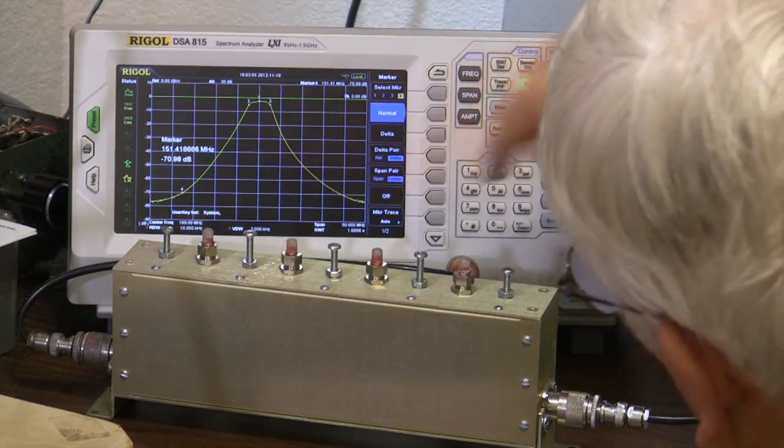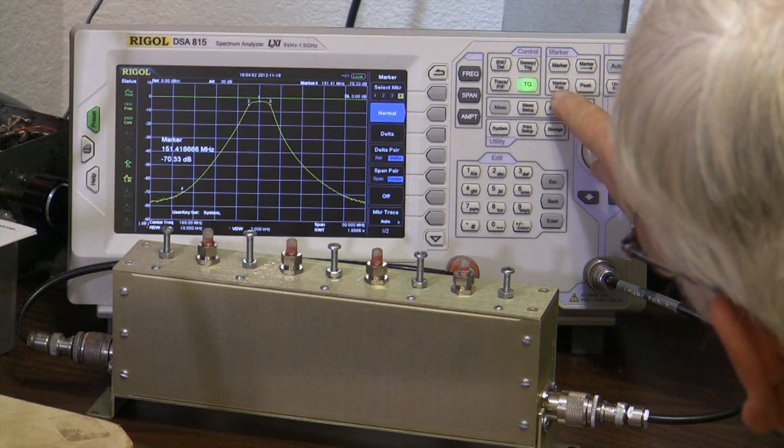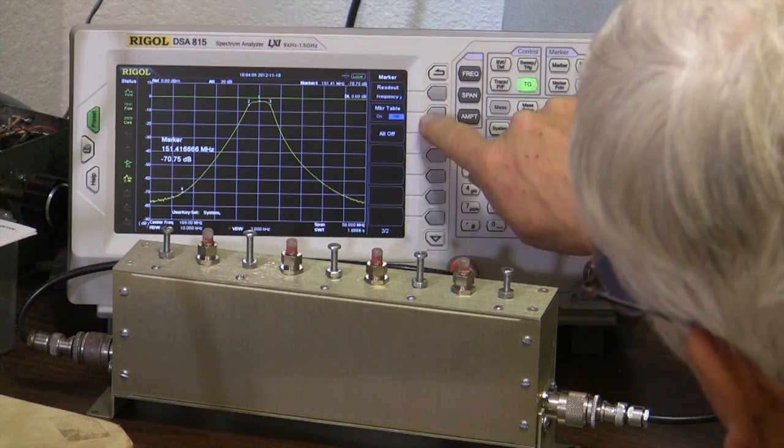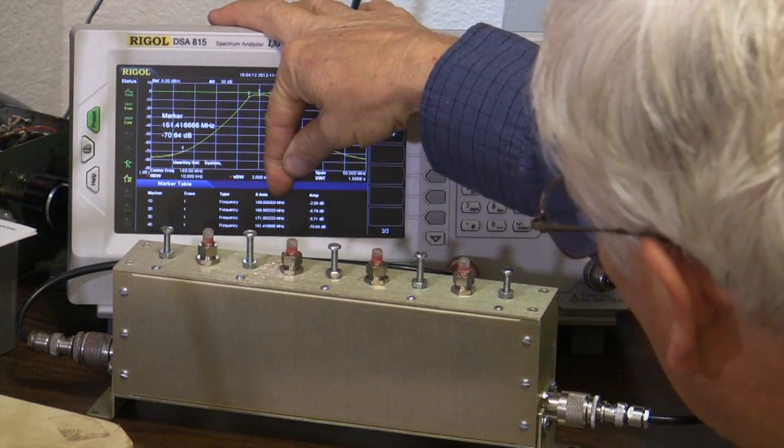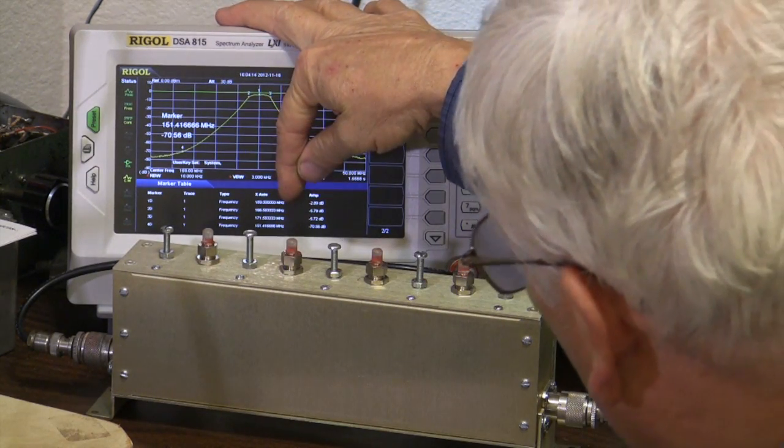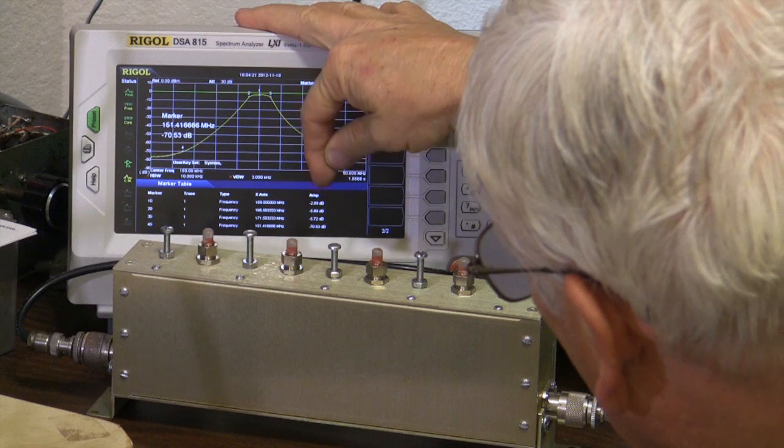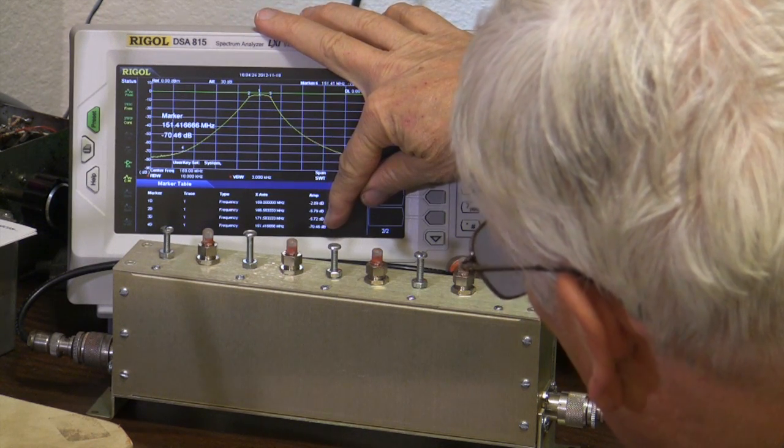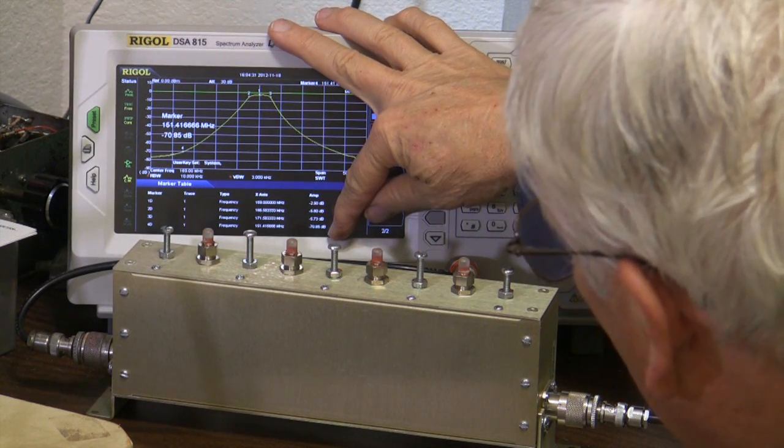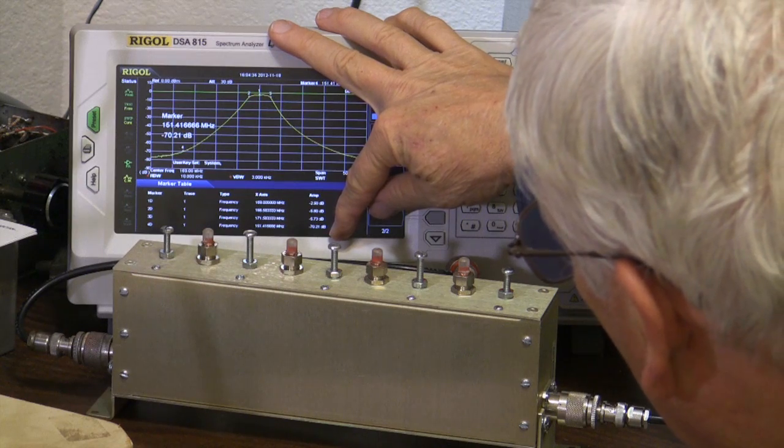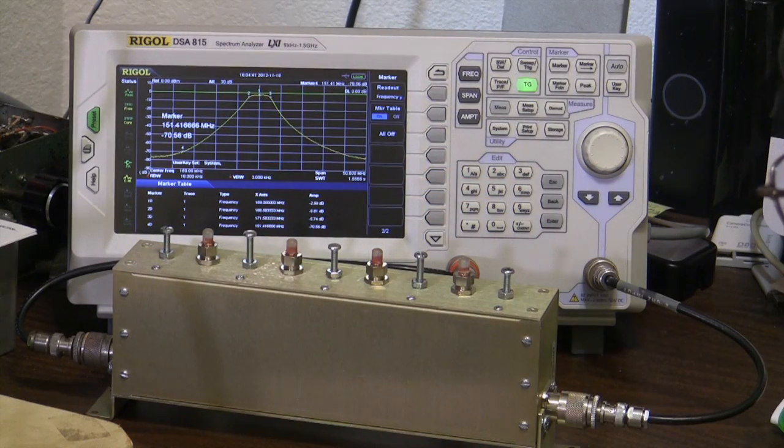All right. Let's find out where everything is here. We will hit the marker. Hit the marker, screen 2, and make a marker table. So, at 169, we're at minus 2.89. At 1665, we're at minus 5.79, about 3 dB below that. We're at 5.72, which is 3 dB below that. At 171.583, and at 151.416, we're at minus 70, to give everybody a pretty good idea of what this filter's pass capability is.